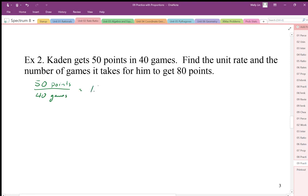When I divide this, I'm going to get 1.25, and my units are points for one game, or points per game. So there is my unit rate. So I want to figure out the number of games to get 80 points.